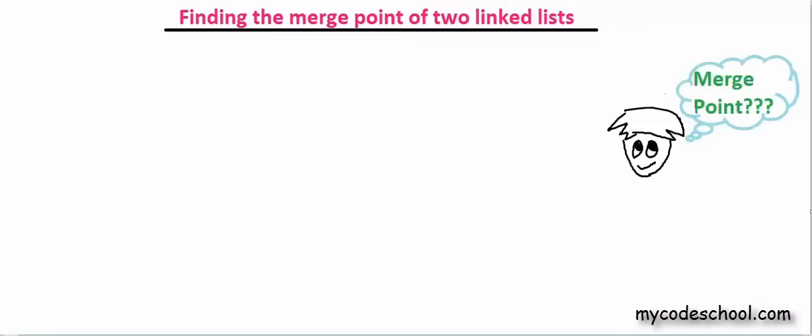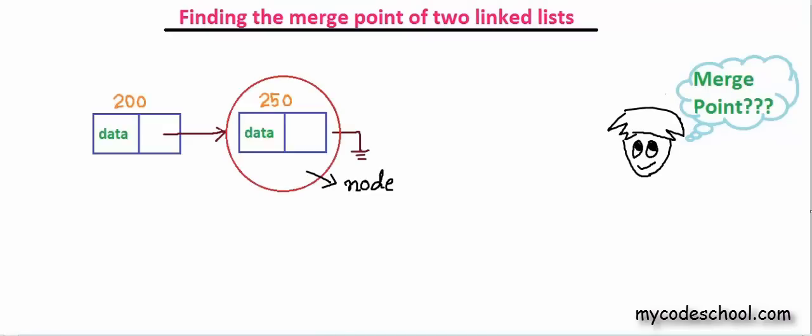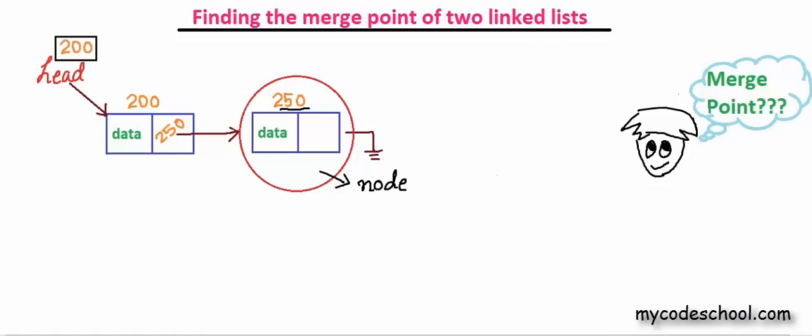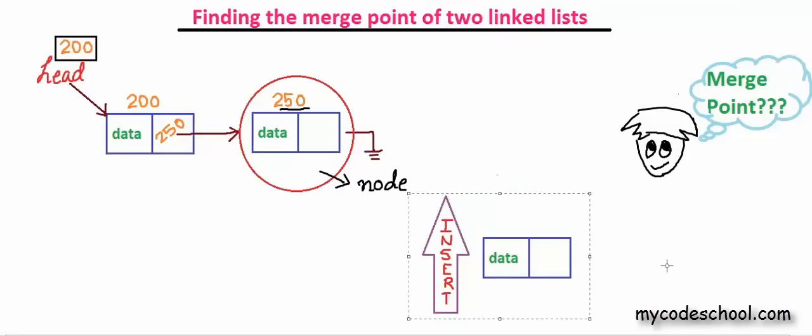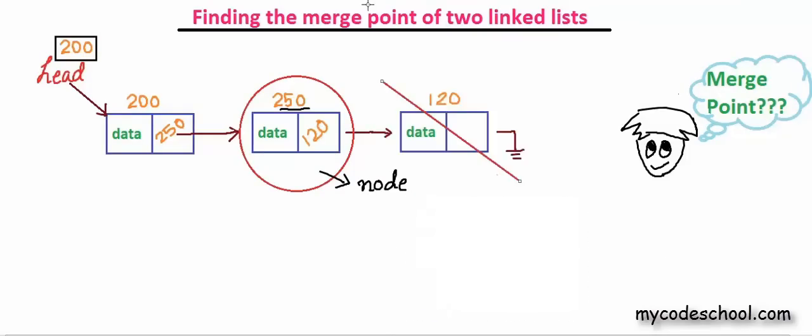So what do we mean by the merge point of two linked lists? I have drawn a linked list here. We have two nodes and I have assumed that these nodes are at addresses 200 and 250 in memory. Each node has two fields, one to store the data and another to store the address of next node. A head pointer points to the first node of the linked list. Linked list grows dynamically. So we can add a node to the list or delete a node from the list as and when we need it.